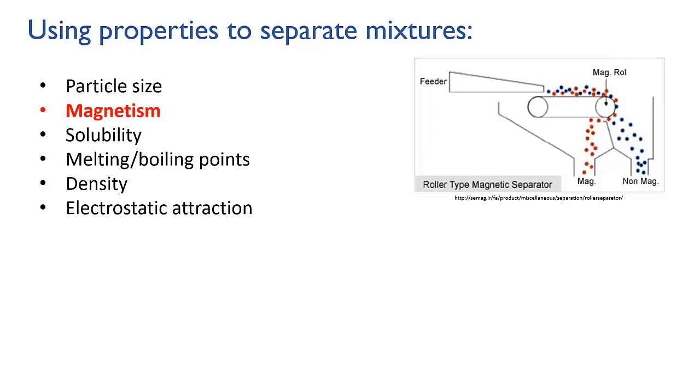Recycling centres use this to remove magnetic material from mixed recycling streams. You can see in this diagram that the roller at the end of the conveyor belt is magnetic, meaning that the red particles, which must be magnetic themselves or respond to magnets, get pulled around underneath the roller and so are separated out from the blue ones.